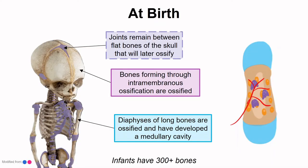At birth, the infant skeleton looks incredibly different from the adult skeleton. Bones forming through intramembranous ossification, like the flat bones of the skull and those of the face, have fully ossified. Joints or fontanelles remain between these skull bones to allow for further growth and some flexibility; eventually these will close through intramembranous ossification. Bones that form through endochondral ossification have fully ossified at the diaphysis — the primary ossification center has formed bone — but the ends of the bones remain cartilaginous.